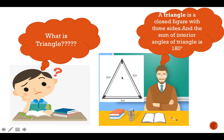What is a triangle? A triangle is a closed figure with three sides, and the sum of the interior angles of the triangle is 180 degrees. As you can see, it's a closed figure with three sides, and when you add all the angles, it will equal 180 degrees.